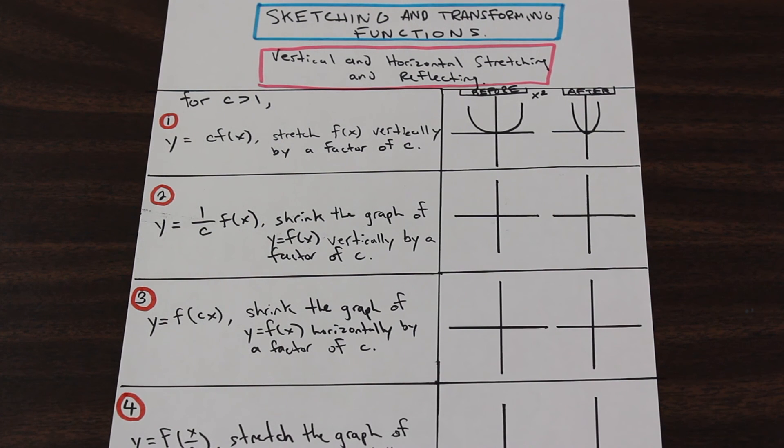So let's go to the second one. We have 1 over c times f of x. So now we're multiplying the function by a smaller number.